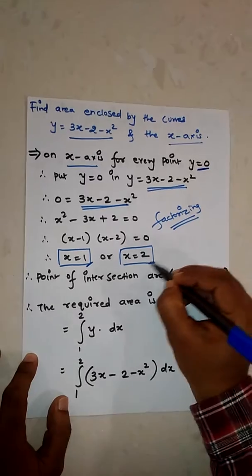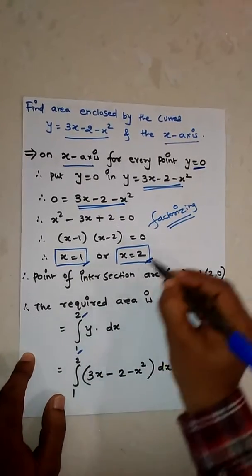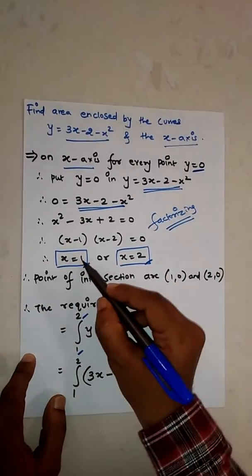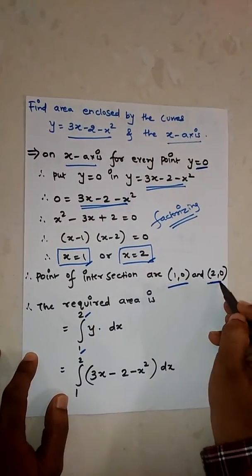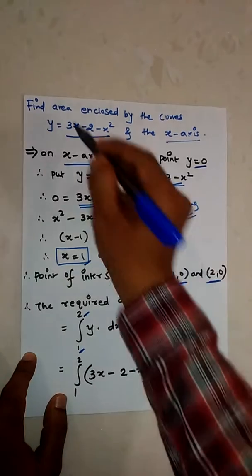This indicates limits. Now the points of intersection are 1,0 and 2,0. So now the required area which we have to find is...